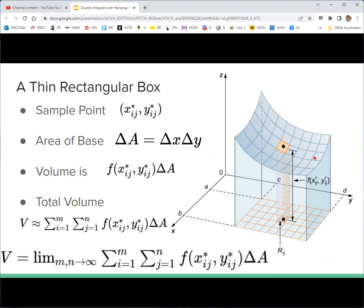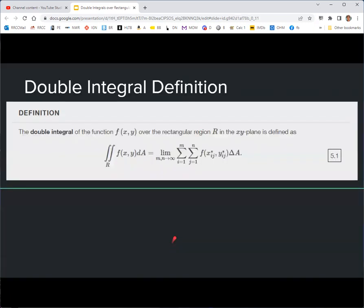But it's a good approximation and it will get better the more rectangles we have. So just like with integrals in calc 1, we will take the limit as the number of rectangles goes to infinity, and of course their size goes to zero. Well, the size of the area of the base goes to zero. And that will be the definition of the double integral of a function of two variables. So that's where that comes from, and it's just the volume between the xy plane and the surface.